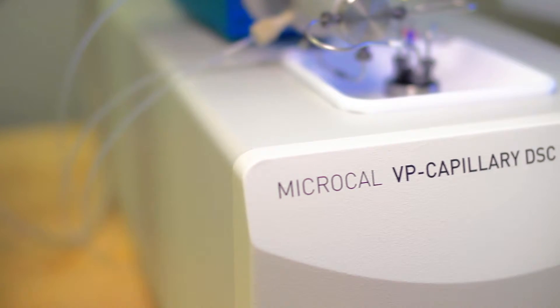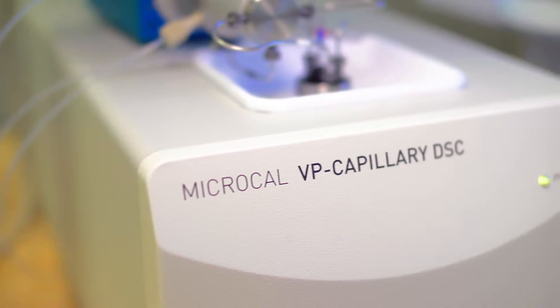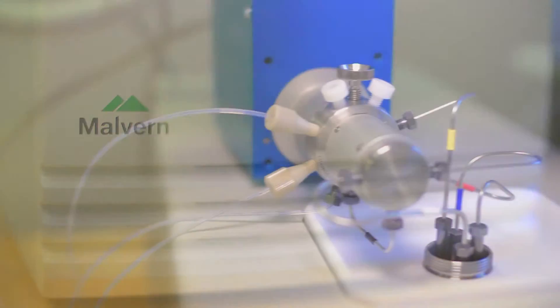The MicroCal VP Capillary DSC range is a highly sensitive, easy to use differential scanning calorimeter for the study of samples in solution.